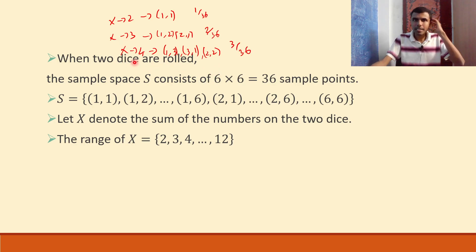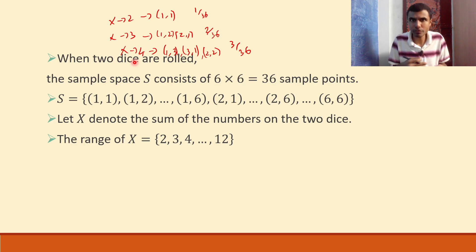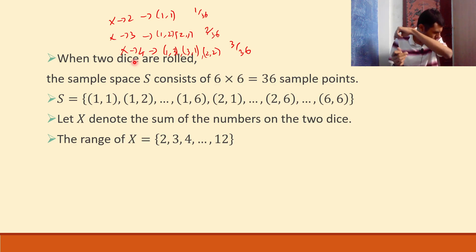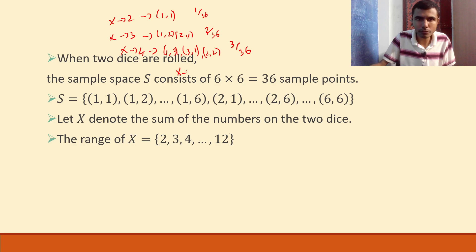What is the probability that capital X equals five? The possibilities are (1,4), (4,1), (2,3), (3,2). So there are four options. If I get these four combinations on the two dice, my sum will be five. So the probability that capital X is five is 4/36.